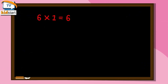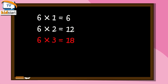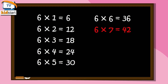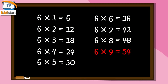Six ones are six. Six twos are twelve. Six threes are eighteen. Six fours are twenty-four. Six fives are thirty. Six sixes are thirty-six. Six sevens are forty-two. Six eights are forty-eight. Six nines are fifty-four. Six tens are sixty.